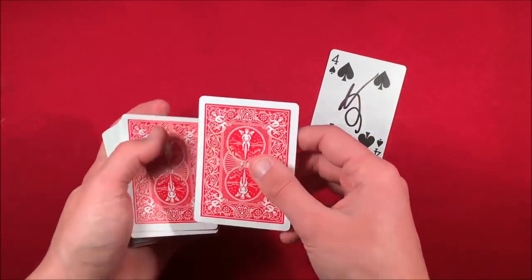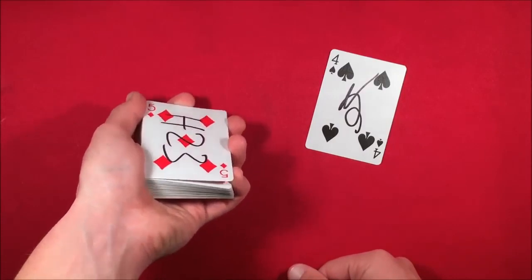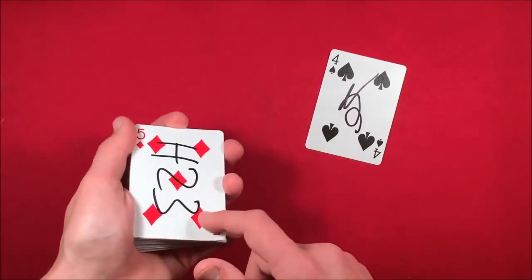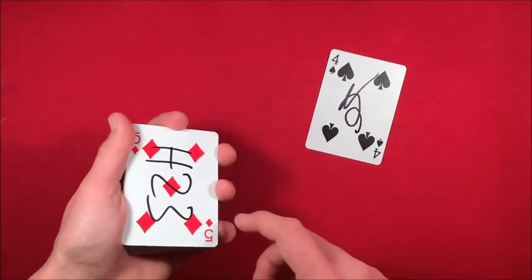As you have the spectator sign their own card, they're really focused on making their own signature—they're not looking at you. You need to flip over the top card and catch a pinky break, then leave the deck face down so the spectator can't see the face-up card. While they're signing, you very briefly flip over that card, catch a pinky break, and leave your hand face down.